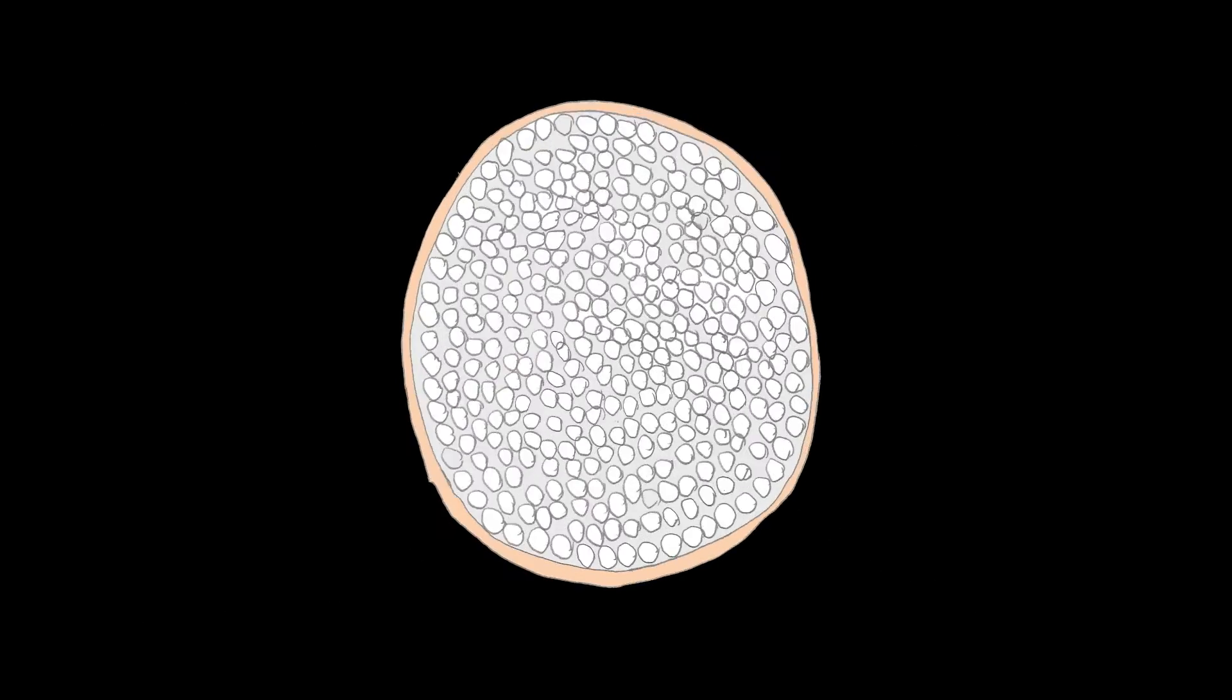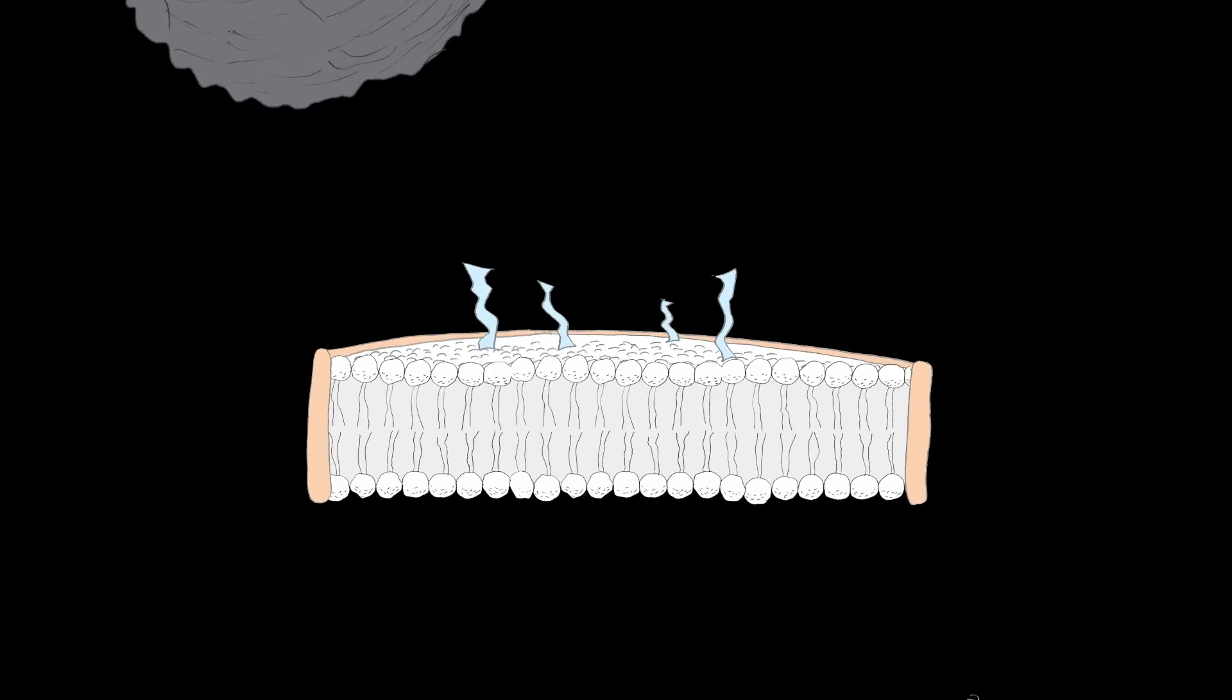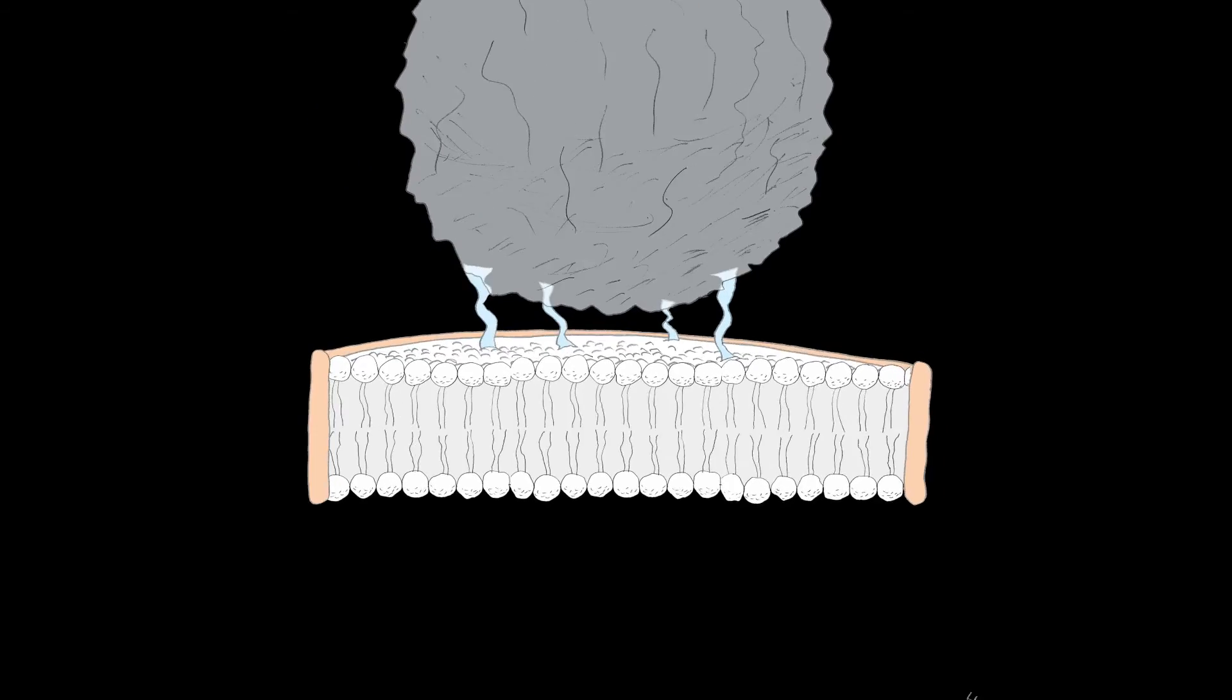We've had success in using the discs to see, for the first time ever, how a virus infects a cell. We did this by adding a protein called CD155. This protein attracts a polio virus, which attaches to the disc.